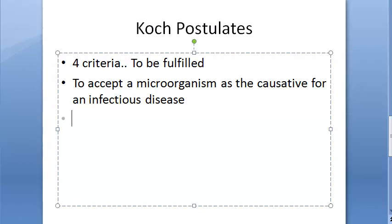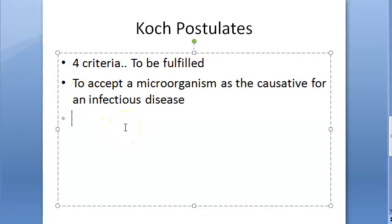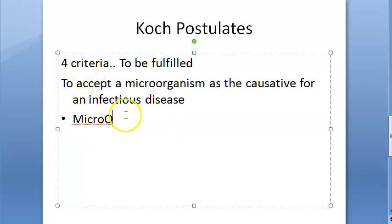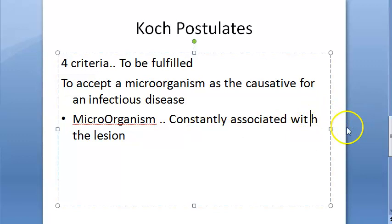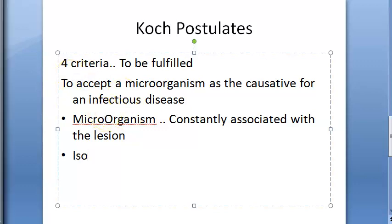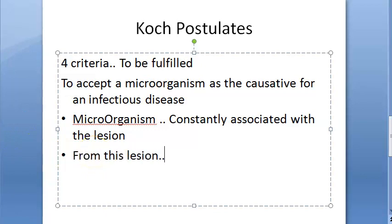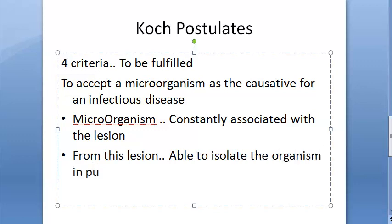The first criterion: the microorganism should be constantly associated with the lesion. So from a disease which has these lesions, you should always be getting the same microorganism. The second criterion: you should be able to isolate the organism in pure culture from the lesion.